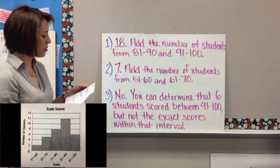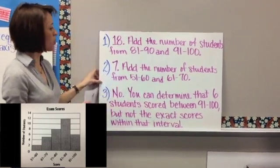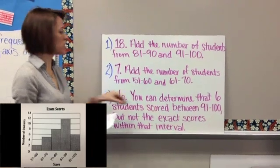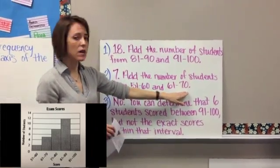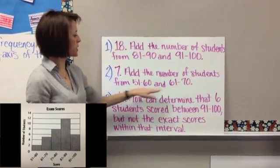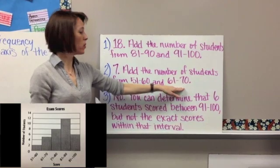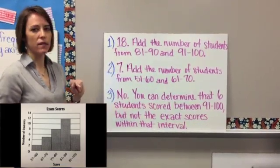Number two is asking you how many students scored less than 71 on the exam. So in order for them to score less than 71, obviously the first one under 71 is 70. So anybody that was behind that 71, the 51 through 60 and the 61 through 70, are the people that scored under a 71. And when you add those two together, you should have got 7.